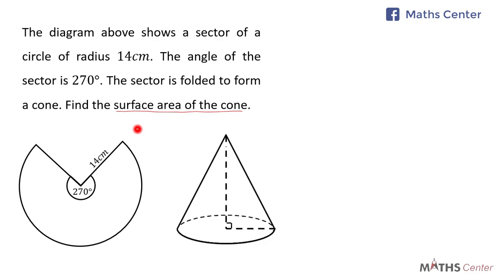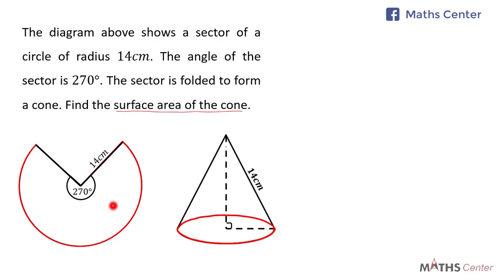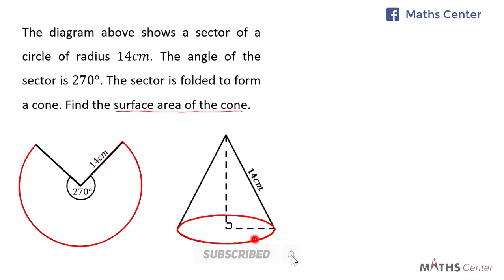When a sector is folded to form a cone, the radius of the sector will be the same as the slant height of the cone. Also, the length of the arc of the sector will be the same as the circumference of the circular base of the cone.